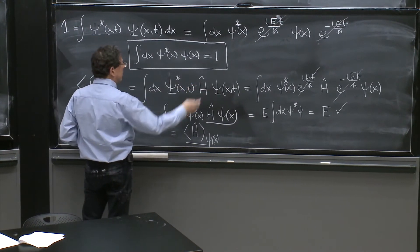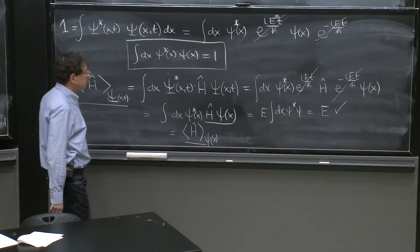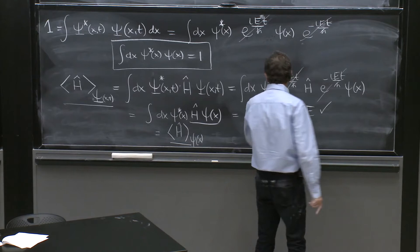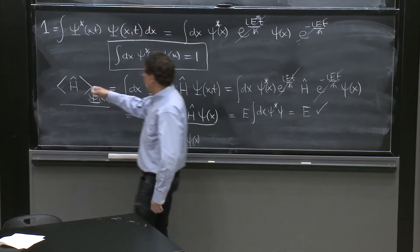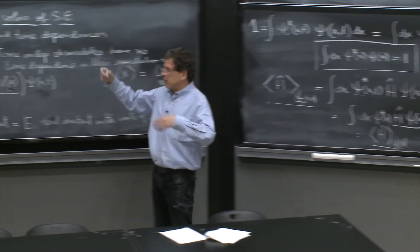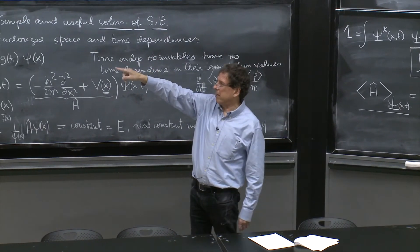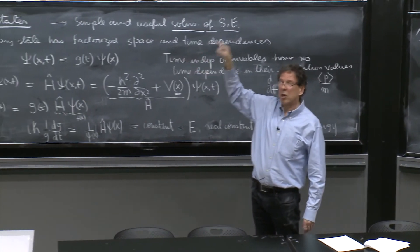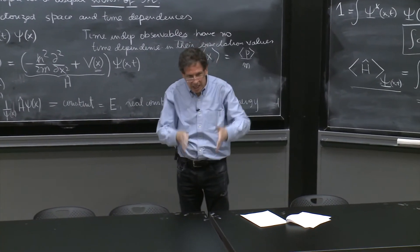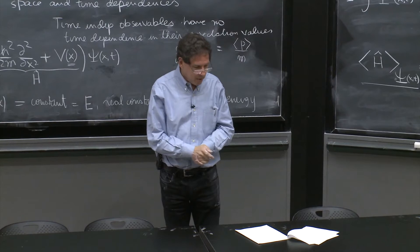If you have an H squared here, it will give you an E squared, and the expectation value of H is equal to E. So the expectation value of H squared minus the expectation value of H squared will be zero. Each one will be equal to E squared. Nothing will happen. No uncertainties whatsoever.